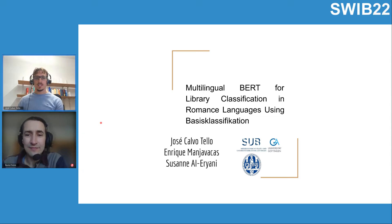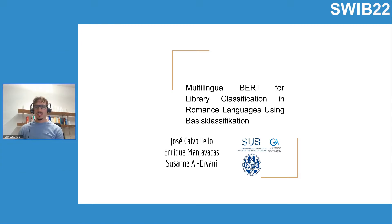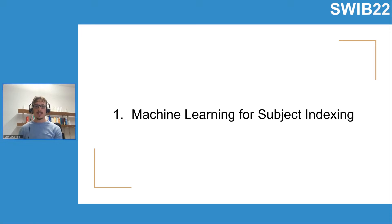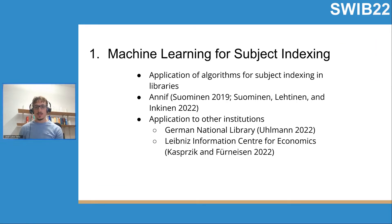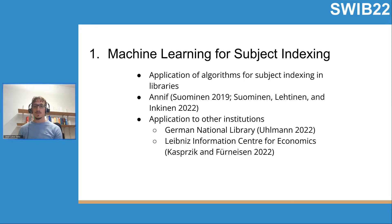Thank you very much. I will be presenting alone, but Andrike is also here to answer questions later. The topic of this presentation is machine learning for subject indexing. This is a topic that has been around for quite some time, but in the past years we have seen a new generation of algorithms and tools. One of the main tools is ANNIF, developed at the National Library of Finland and applied to other institutions, such as the German National Library and the Information Center for Economics.